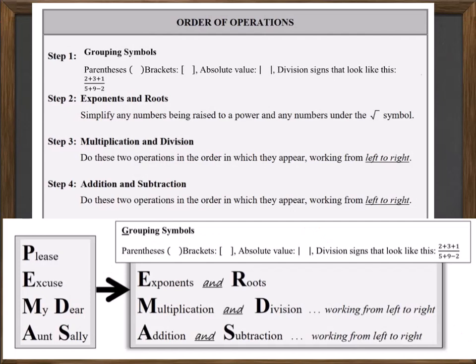So let's look at the correct order. The first thing is instead of parentheses, or 'please,' we need to include every grouping symbol. It's true that parentheses are a type of grouping symbol, but as we advance in our math career, we'll realize parentheses are not the only grouping symbol. We also have brackets, absolute value, and when division is written as a fraction bar, it groups the top and bottom numbers together — so that also acts as a grouping symbol.